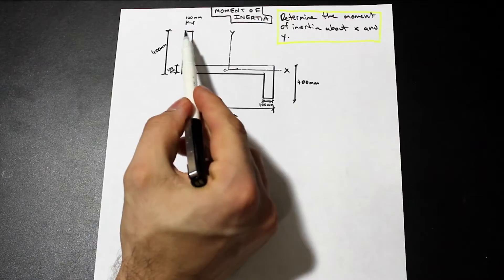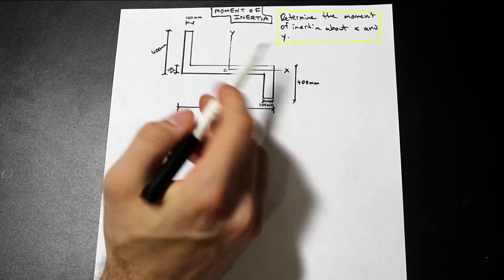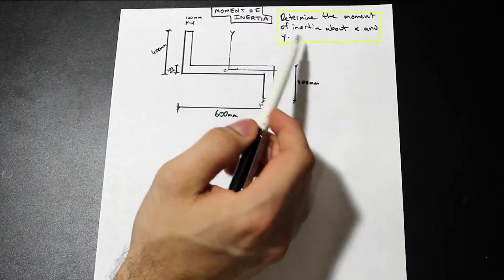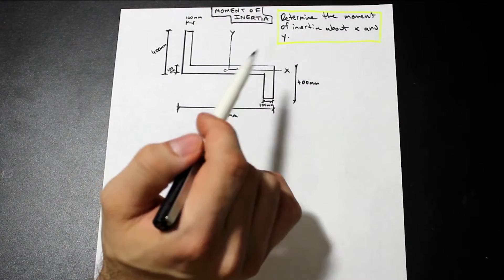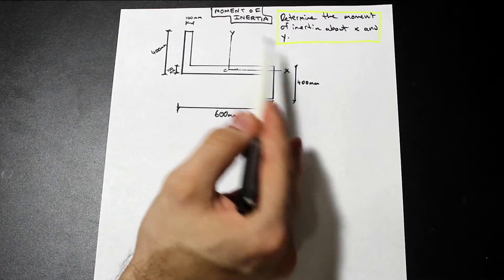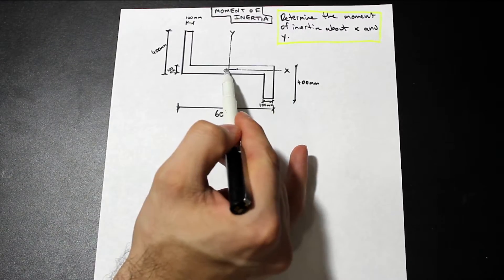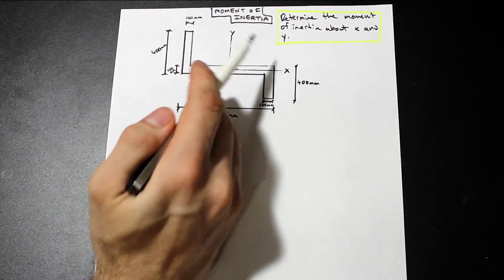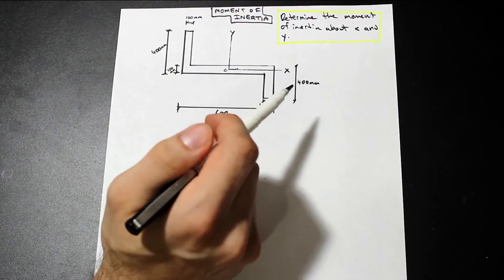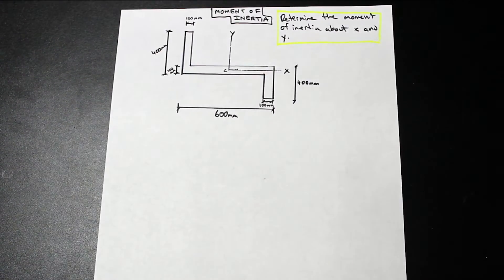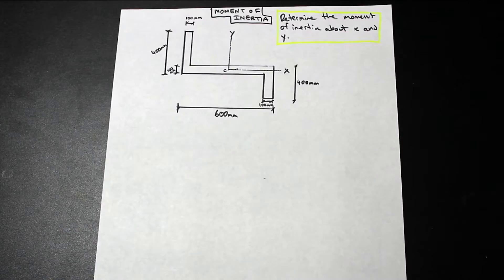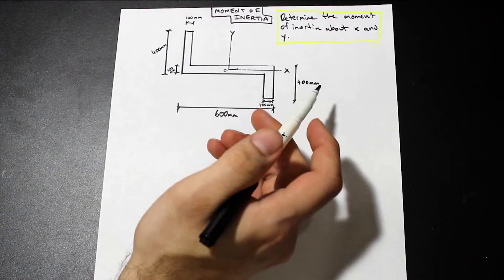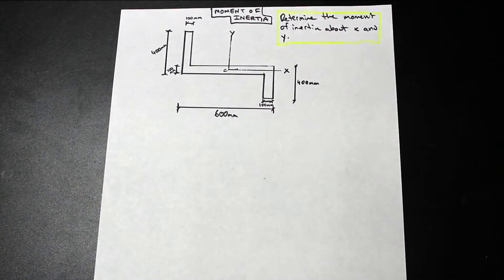Let's take a look at this question. We have this composite section, and we're given the y axis and the x axis, and we're asked to determine the moment of inertia about x and y. The benefit of this question is that we have a symmetric section, and we're given the centroid. In some questions you won't be given the centroid and you'll have to solve for where the centroid is in both axes. But in our case, we have a symmetric section, so we can focus on how to apply the parallel axis theorem.